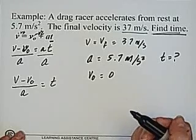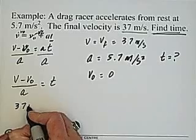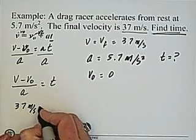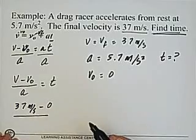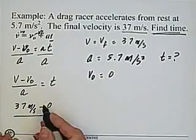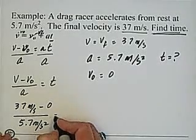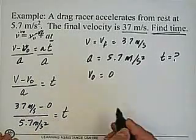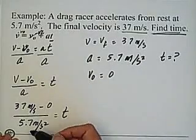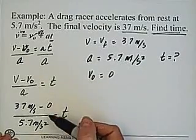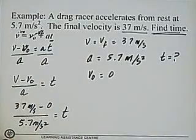At this point we just plug in our numbers. We know that our velocity is 37 meters per second, V₀ is zero, and our acceleration is 5.7 meters per second squared. We plug in those numbers and it will give us time. I'm not going to work through the calculation — I'm just showing you that when you set it up this way, it's much simpler. We just plug in our numbers into our calculator and we'll get our answer for time.